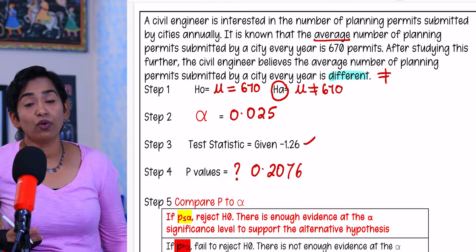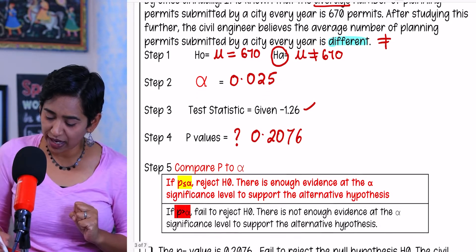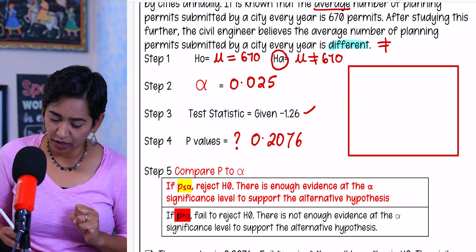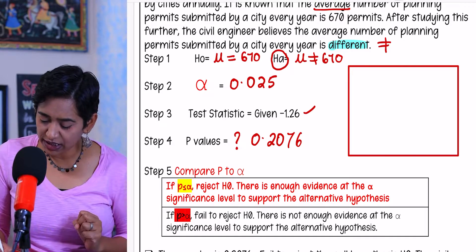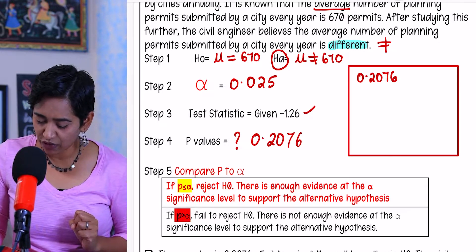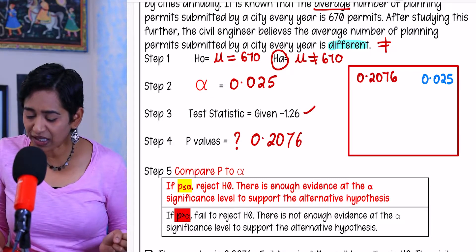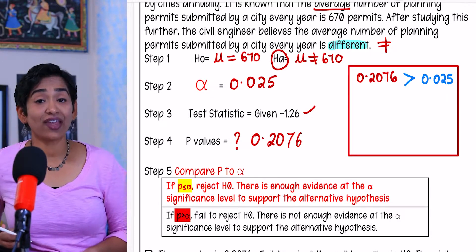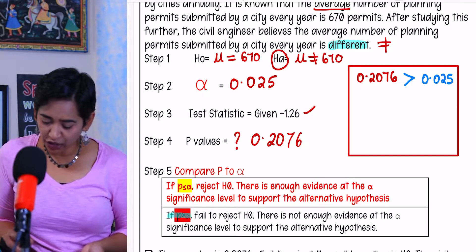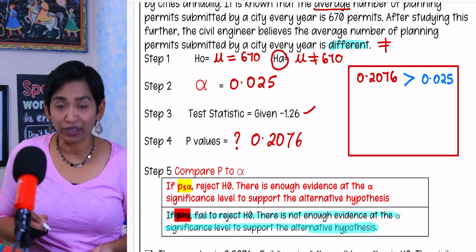Once I have the p-value, I take it and compare it to alpha. My p-value is 0.2076 and my alpha is 0.025. As you can see, my p-value is greater than alpha. So when my p-value is greater than alpha, I fail to reject my H-naught.